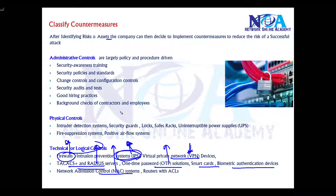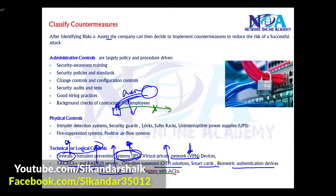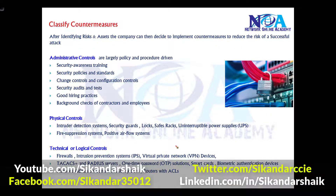Technical controls also include implementing Network Admission Control (NAC) systems — for example, when a guest user connects, they should be assigned to the guest VLAN and only be able to access the internet, not the internal company network. Additionally, implementing ACLs on routers or firewalls is used to filter what traffic should be allowed and what should not.